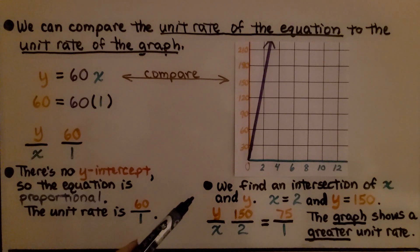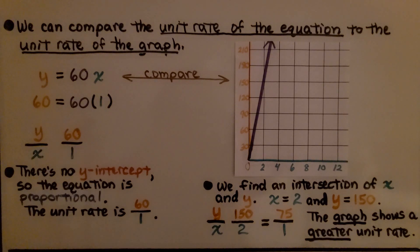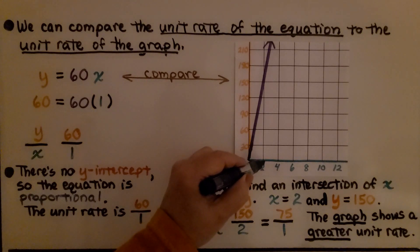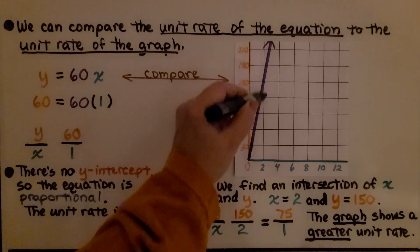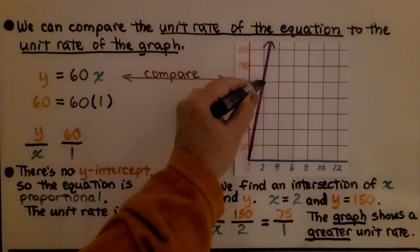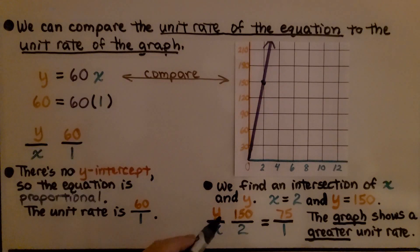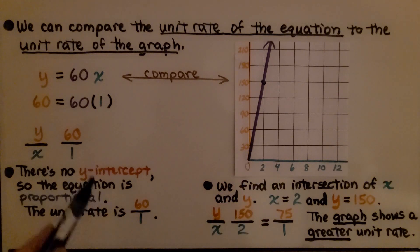Now we can find an intersection of x and y on the graph. We can see for 2 for x, y is 150, right here. For y to x, we have 150 to 2. We can simplify that to 75 to 1. So this graph shows a greater unit rate than the equation.